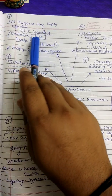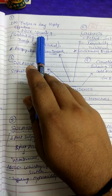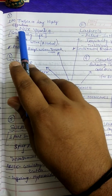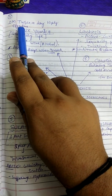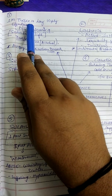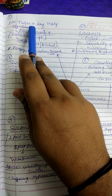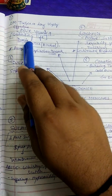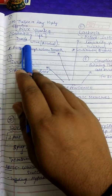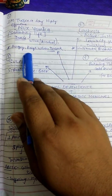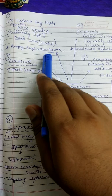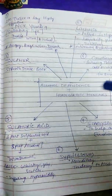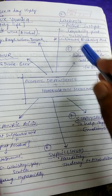First one is Nux Vomica. Nux Vomica medicine sedentary life mein indicate hoti hai. Yaha pe Nux Vomica ka dose diya hua hai: 1M potency, twice a day — highly effective for alcohol dependence. Specific features: sedentary life, desire for wine and alcohol, and anger when drunk.